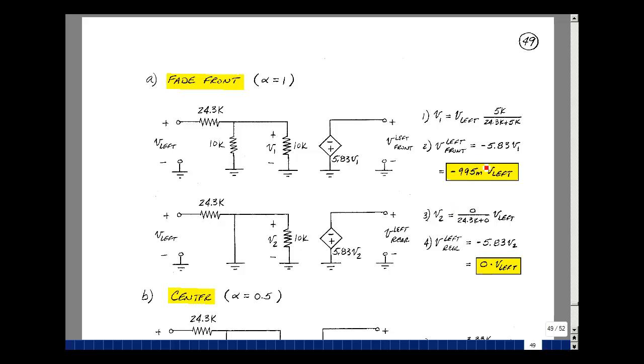To the left front speaker, I basically have all of the left channel showing up. Take a look at the other part of the circuit that goes to the rear speaker. 0 in parallel with 10k is 0, so that's a voltage divider of 0 over 24.3k plus 0 times the output of the left stereo channel. That voltage sees a gain of minus 5.83, but this is equal to 0, so when we substitute that in for V2, we get minus 5.83 times 0 times Vleft. All the sound is going to the front left speaker.